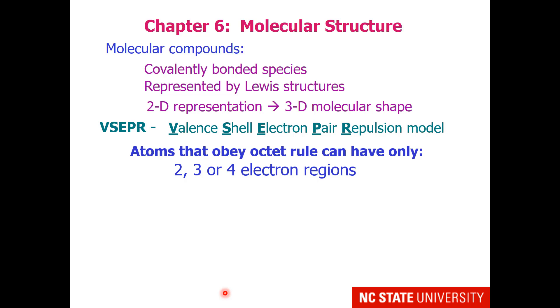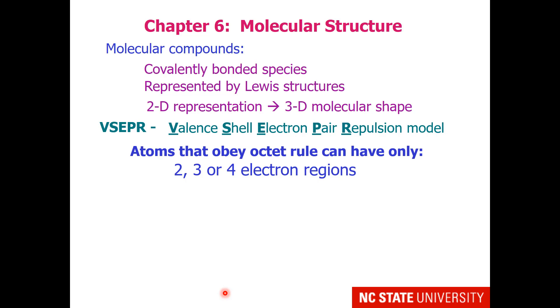Atoms that obey the octet rule can have only 2, 3, or 4 electron regions. This would be when they are a central atom in a compound. The electron regions around the atoms are negative, which means they are like charges. Like charges repel each other and try to get as far away from each other as they can while still being tethered to the nucleus.